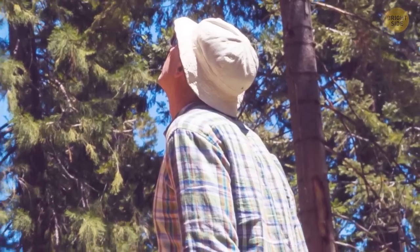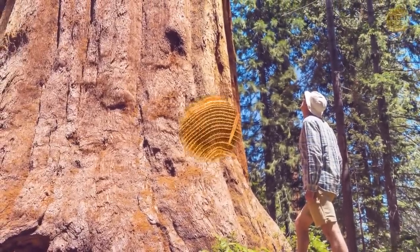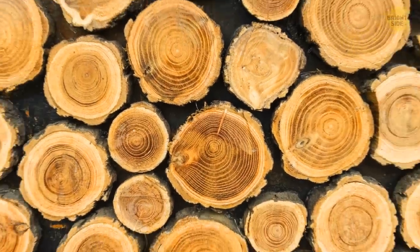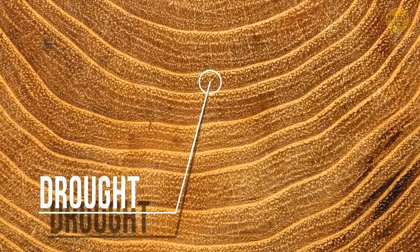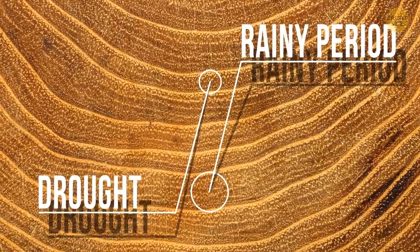You can tell how old the tree you're looking at is by its rings. They can also tell you more about the conditions of a given year, too. When these rings are thin, there was a drought, while the thick ones say it was a rainy period.